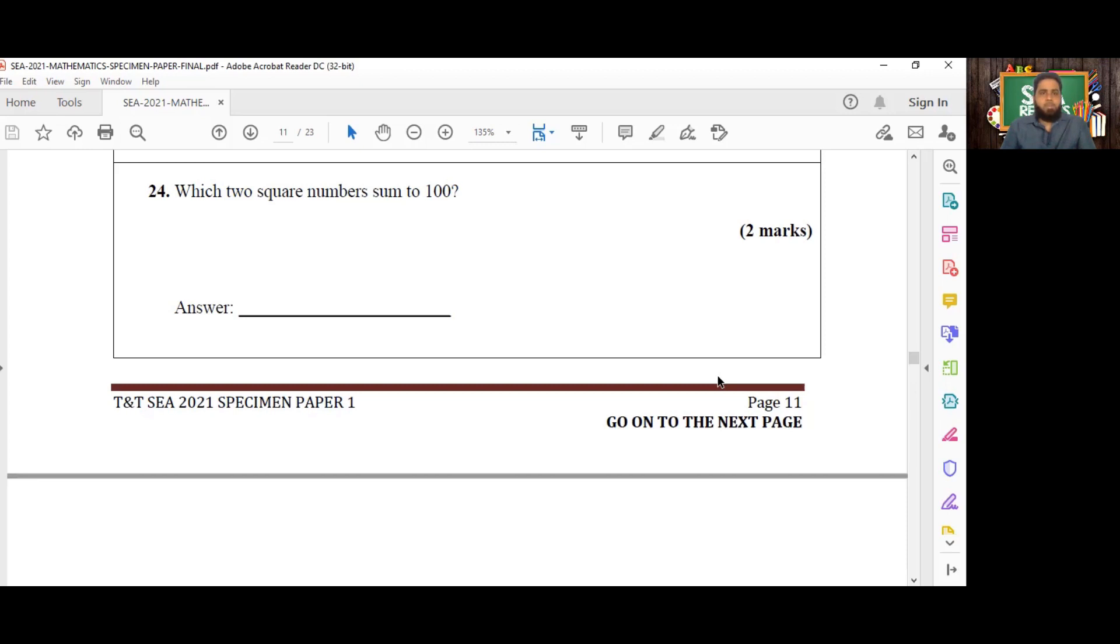Number 24 is which two square numbers sum to 100? Two square numbers here must be summed to make 100. Therefore, we're going to include all of the square numbers that come before 100 and see which two of them would sum to 100.